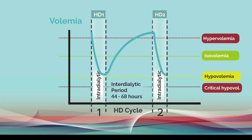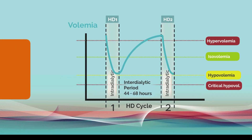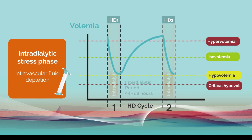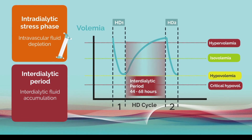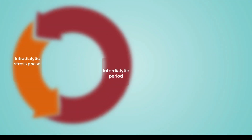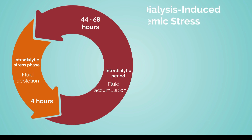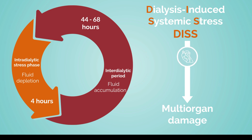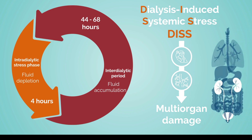Mechanistically, there are two separate hemodynamic stress states: one being an acute interdialytic stress phase reflecting intravascular fluid depletion induced by HD ultrafiltration. A prolonged chronic interdialytic period of extracellular fluid accumulation follows, leading to fluid overload, which is additionally worsened by potentially loading patients with the prescribed hemodialysate sodium during the HD session. This fluid volume vicious circle in CKD patients is the main driver of dialysis-induced systemic stress, leading to multi-organ damage due to cardiovascular impairment and reduced tissue perfusion, resulting in long-term structural and functional damage of vital organs.